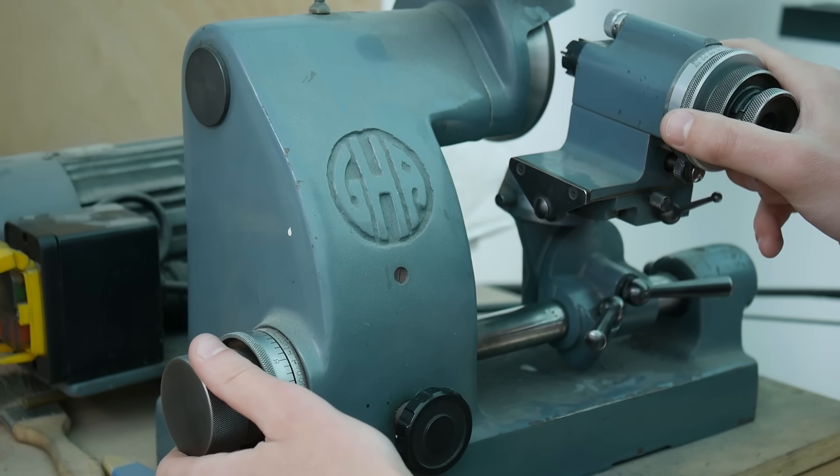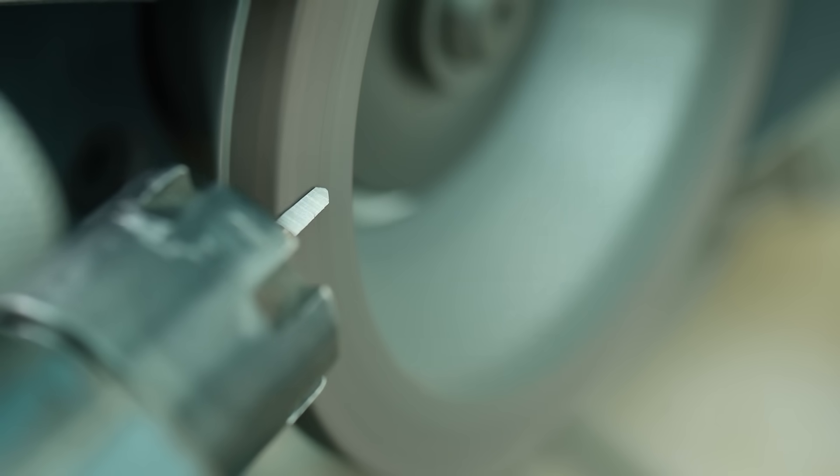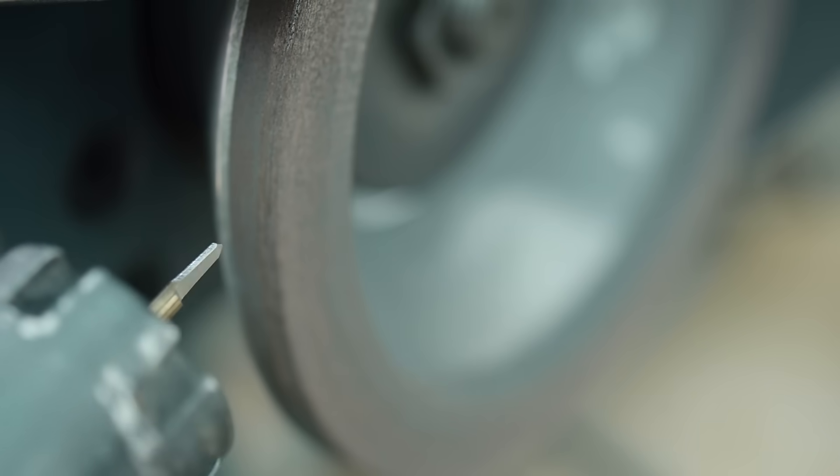Firstly, a flat is ground on the reamer to the halfway point, and then I grind a 20 degree relief behind the cutting edge. The final hole diameter is burnished to size by the short parallel portion of the reamer, which is left untouched by the grinder.